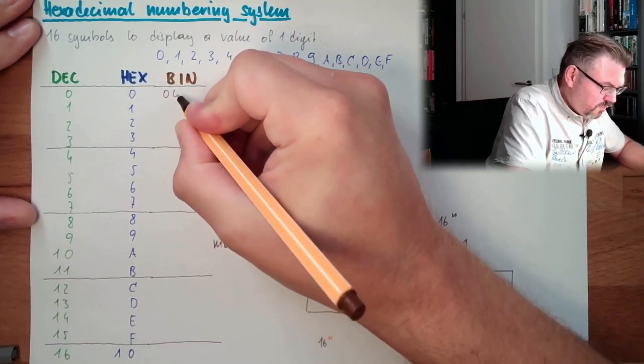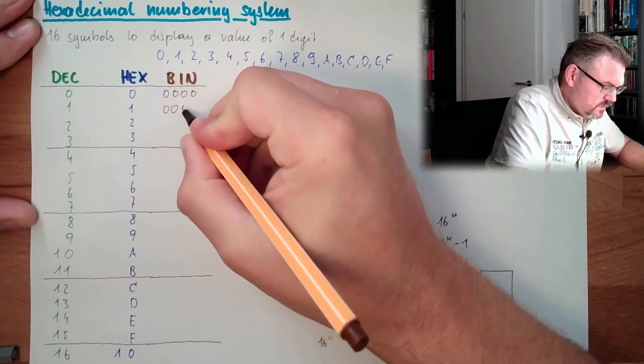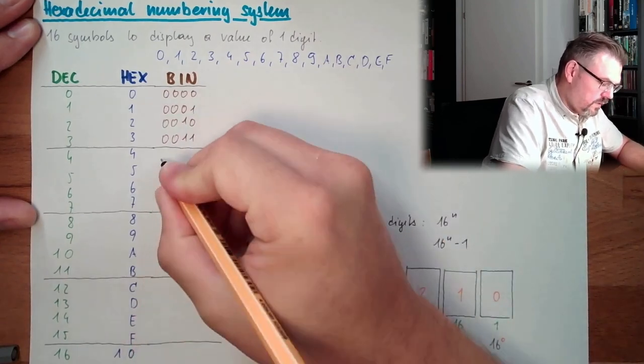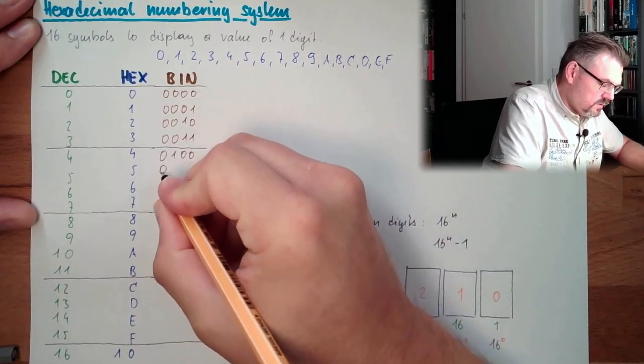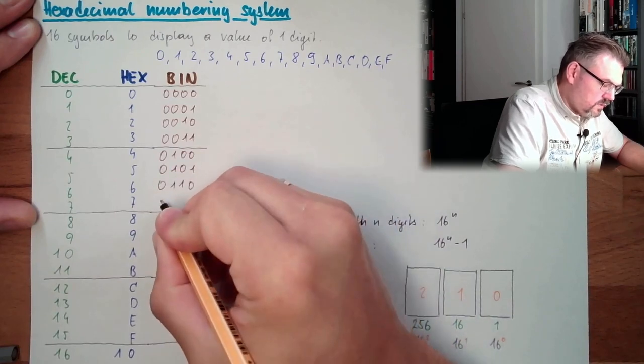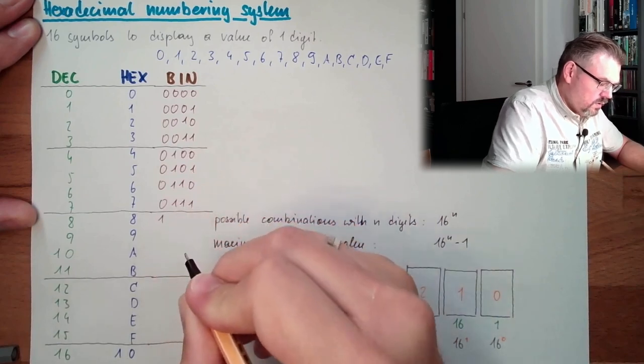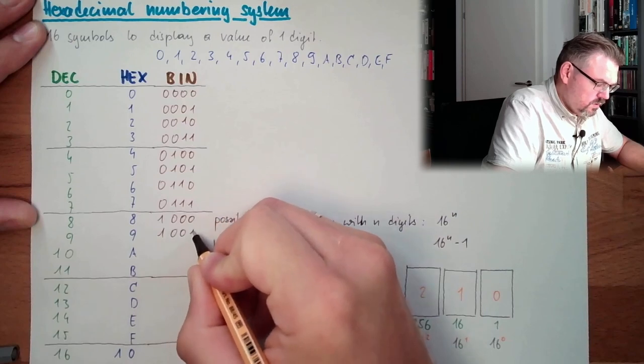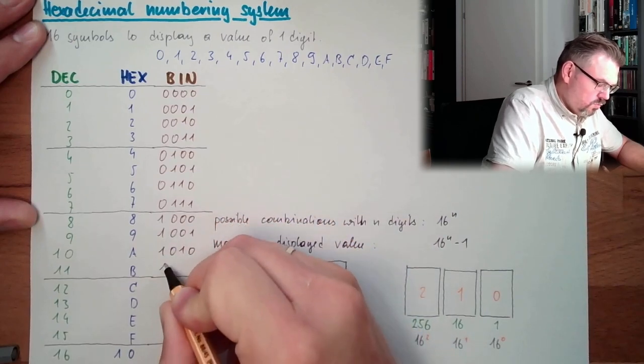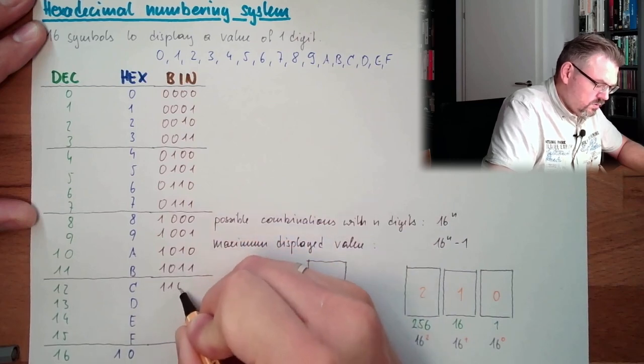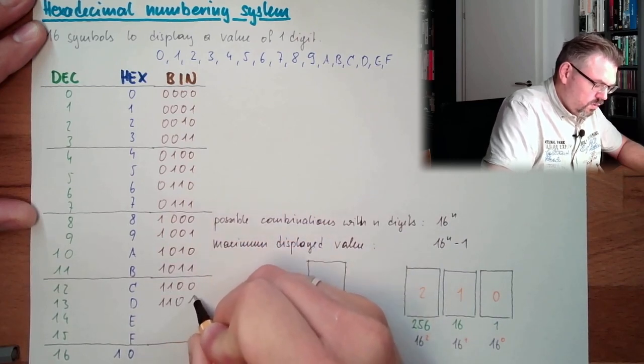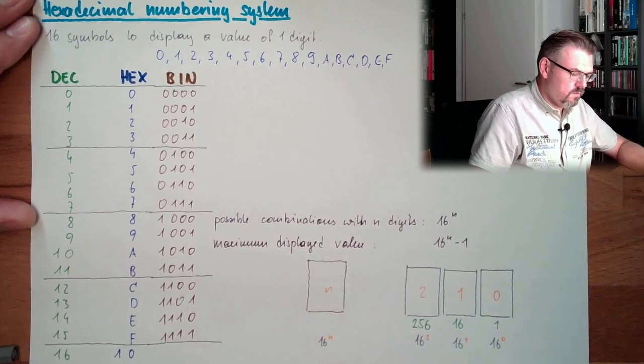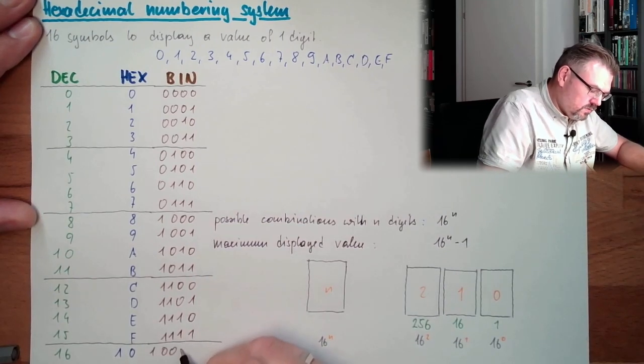So I will group in 4. We said 0000, 0001, 0010, 0011, and then 0100, 0101, 0110, 0111, and 1000, 1001, 1010, 1011, 1100, 1101, 1110, 1111. And here we would have 1, 0, 0, 0, 0.